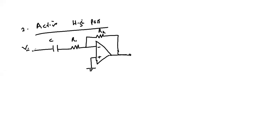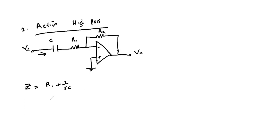This is the input V_in and this is our output V_out. We notice there is an impedance on the forward path. The impedance Z on the forward path is obtained as Z = R1 + 1/sC, since the capacitor and resistor are in series. This can be written as (sCR1 + 1) over sC.